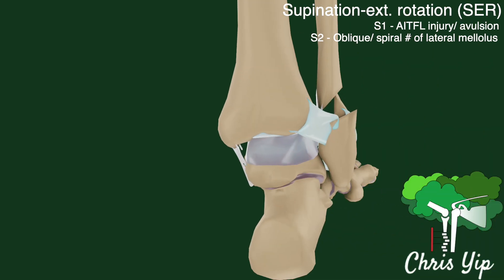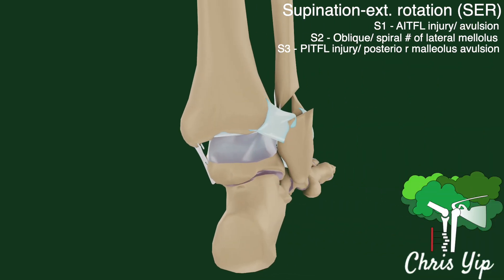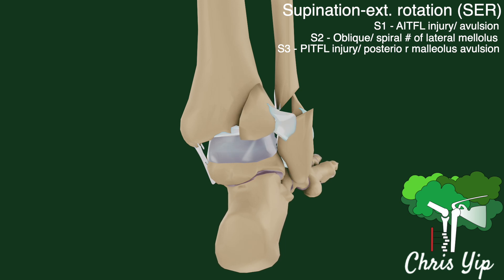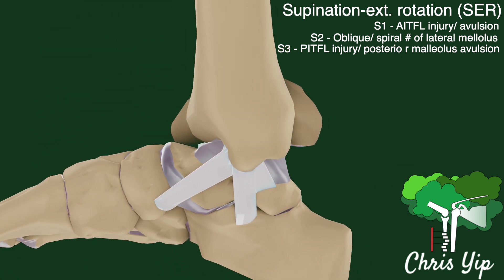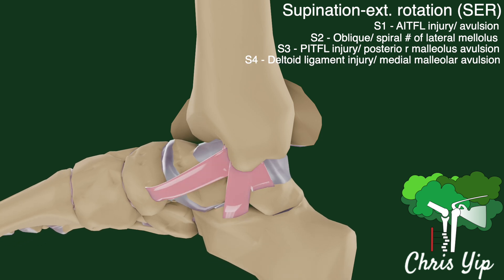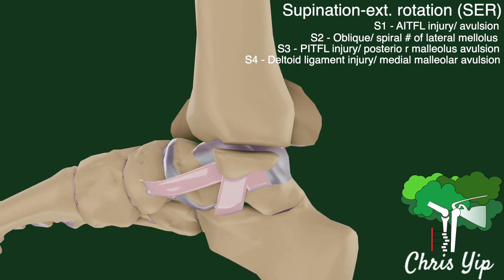If the deforming force continues to be exerted, there can be an injury to the posterior inferior tibial fibular ligament or an avulsion of the posterior malleolus. The mechanism for the fracture of the posterior malleolus is not well understood. It has been suggested that it can be due to an avulsion of the posterior inferior tibial fibular ligament or a push-off fracture from the talus rising from underneath. Finally, the deltoid ligament can also be disrupted, or a transverse medial malleolus fracture can take place.